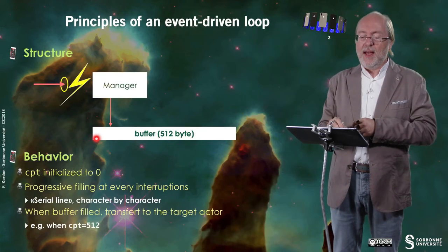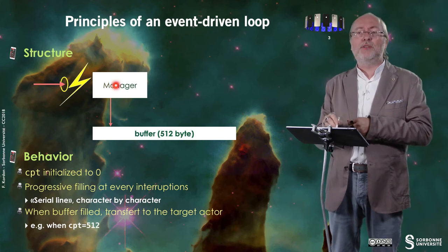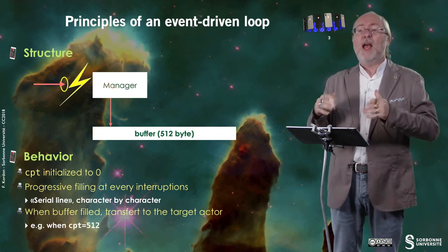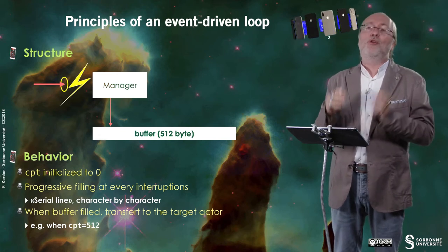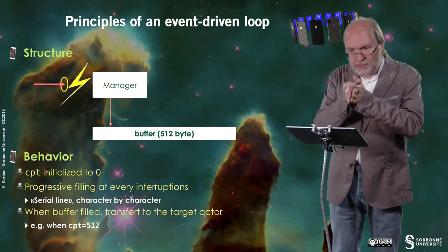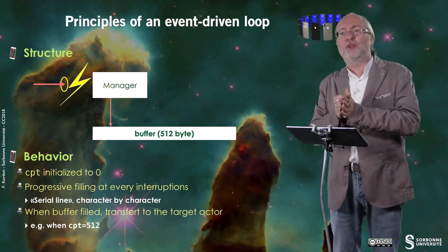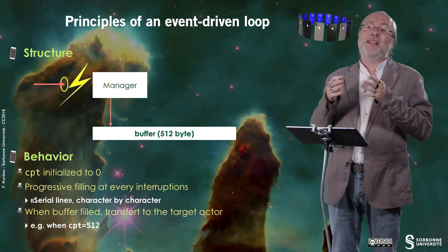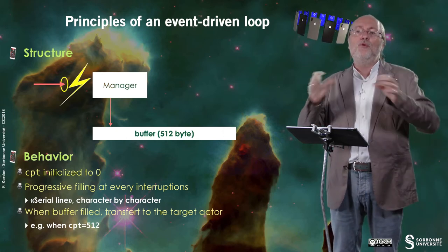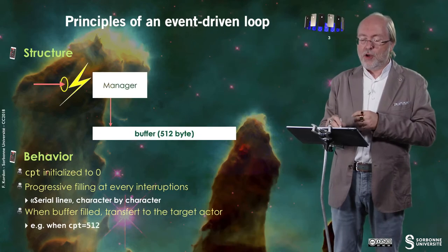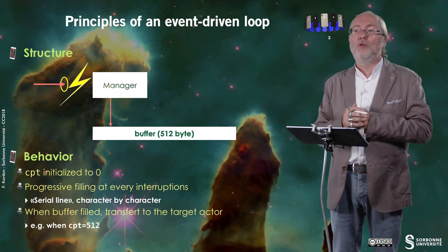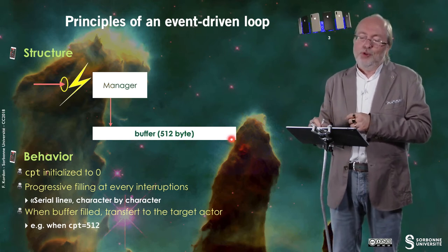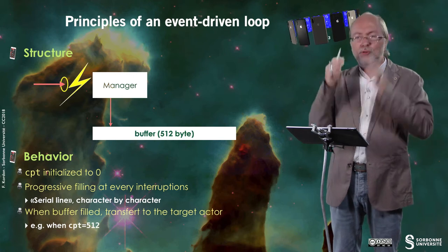I have a counter that is handled by the manager. The counter is initially set to zero. You start here, and when you get a character, this generates an event — you pick up the character, put it in the buffer, and increment the counter. The next time, you will put the character at the second position, and so on. Once you reach the size of the buffer, you say: okay, I have a full consistent piece of information, and I pass it to the target actor which is involved.